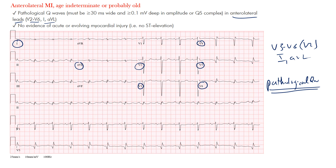We also look for a QS complex. To understand that, consider the anatomy: we have a P wave, then the QRS complex. If there's no initial negative deflection, you have a P wave, R wave, S wave, and T wave. But if there is one, you have a P wave, a small Q wave, an R wave, an S wave, and a T wave.